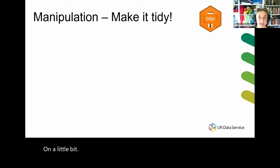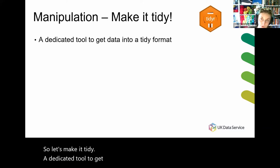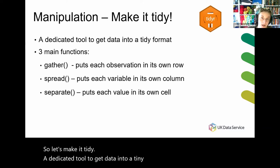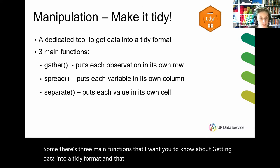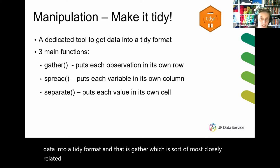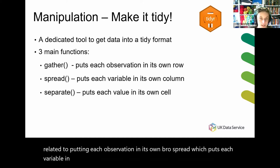Let's make it tidy. A dedicated tool to get data into a tidy format has three main functions: gather, which is most closely related to putting each observation in its own row; spread, which puts each variable in its own column; and separate, which puts each value in its own cell.